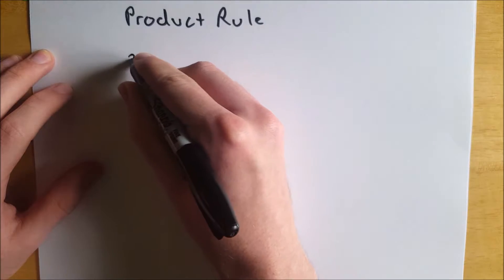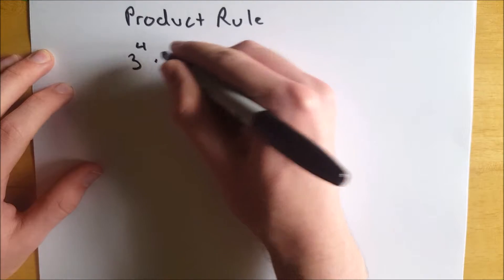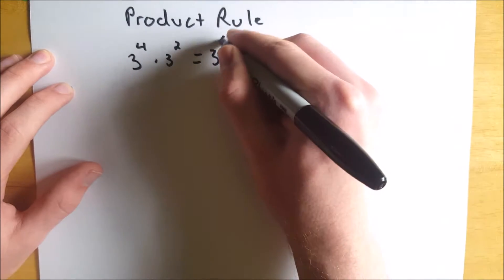So let's look at an example. The product rule tells us that, for example, 3 to the power of 4 multiplied by 3 to the power of 2 is equal to 3 to the power of 6.